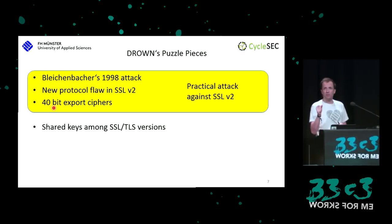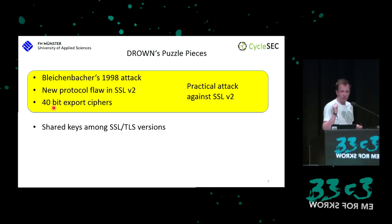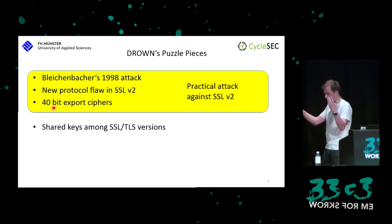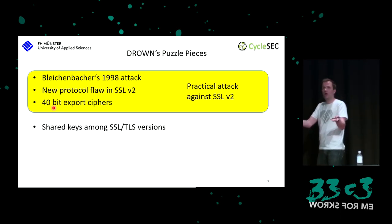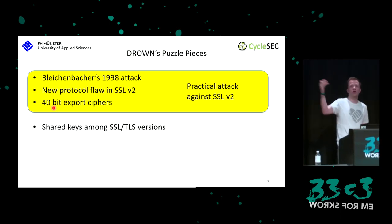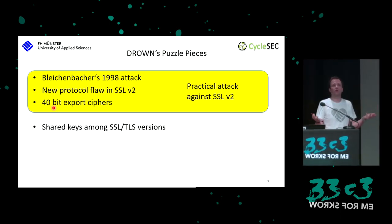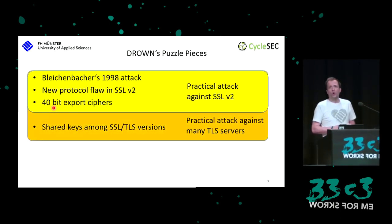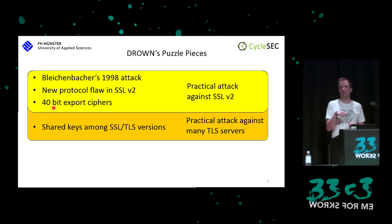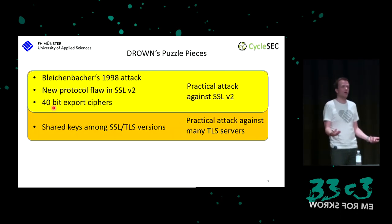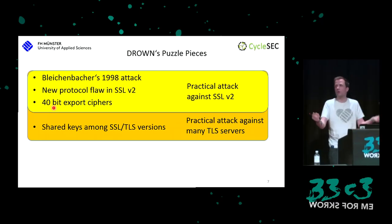The second thing to look at is shared keys across different SSL and TLS versions. When you set up an SSL server supporting SSL v2, v3, and TLS 1.0 through 1.2, it always uses the same RSA key pair. When we take this into account, DROWN becomes a practical attack against many TLS servers — practical in an academic sense, meaning it's expensive but doable.